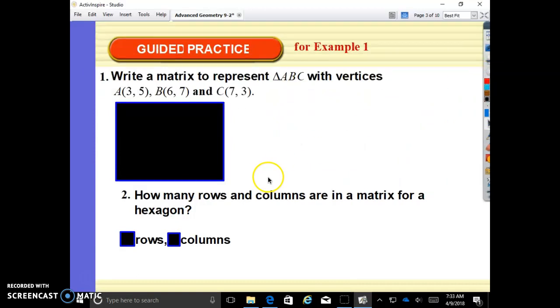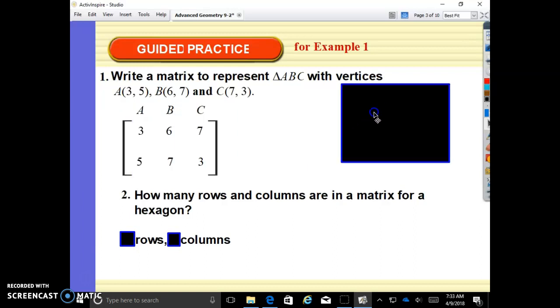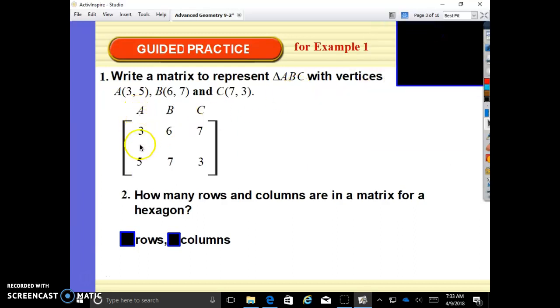Rating matrix to represent triangle ABC with the following vertices. You would just literally go A, 3, 5, B, 6, 7, C, 7, 3. And that's it.